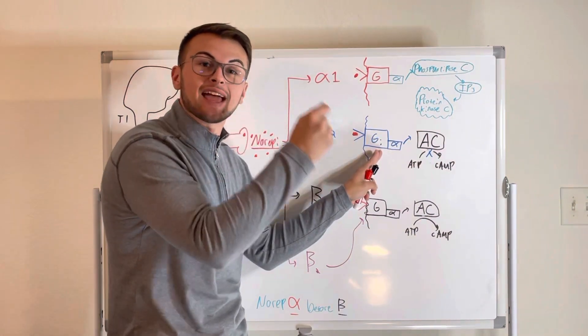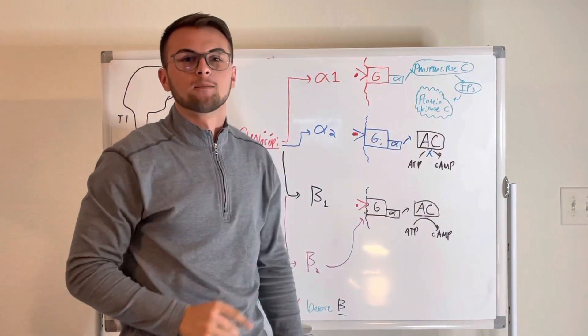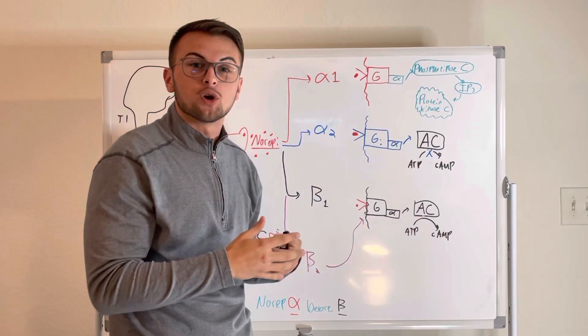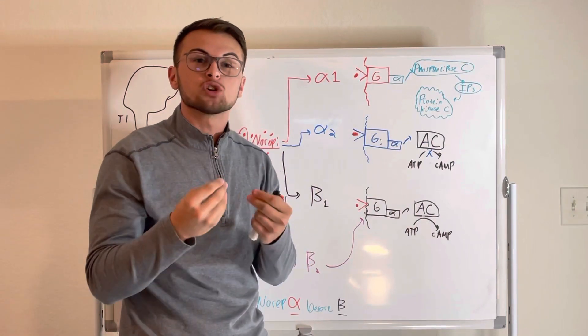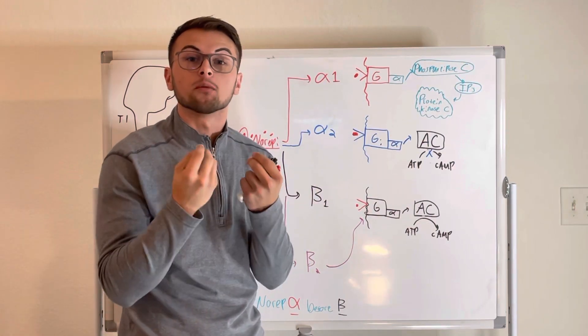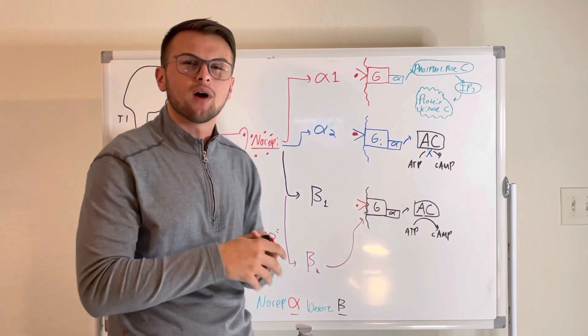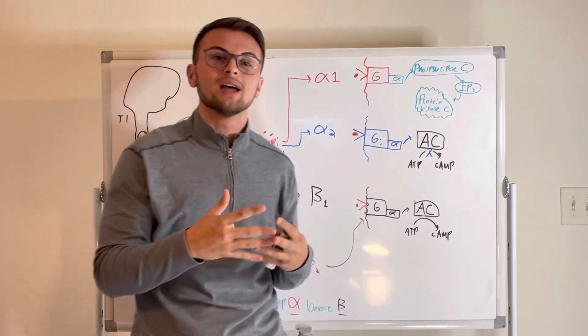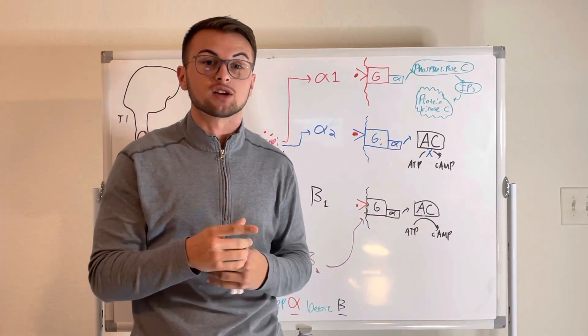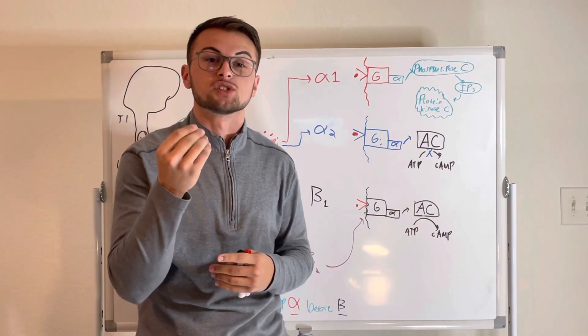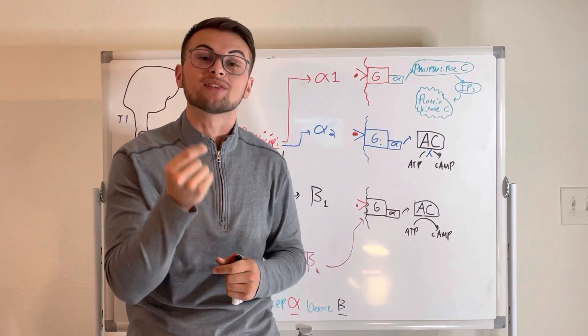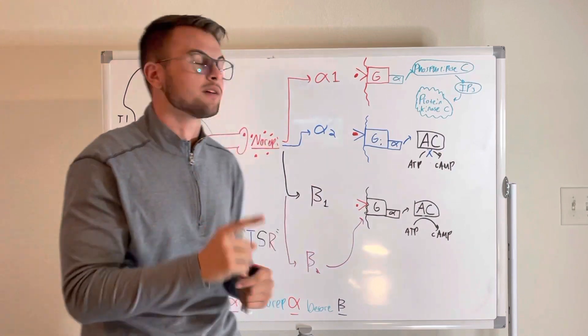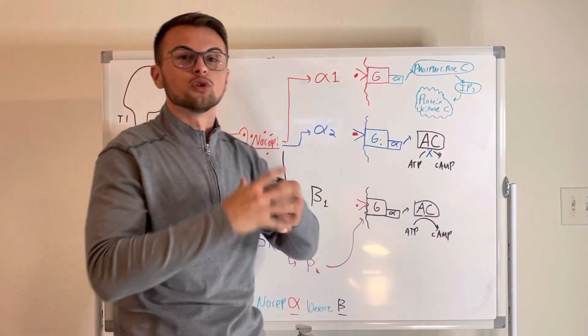So first, we have the alpha-1 receptor. In general terms, we need to remember that it will constrict our blood vessels, which will raise our blood pressure. So how does it do this? Well, intuitively, we know from our other videos that smooth muscle contraction, remember in the blood vessels it's smooth muscle, is dependent on the amount of calcium inside the cell. So how do we get there? How do we get from norepinephrine to constriction?